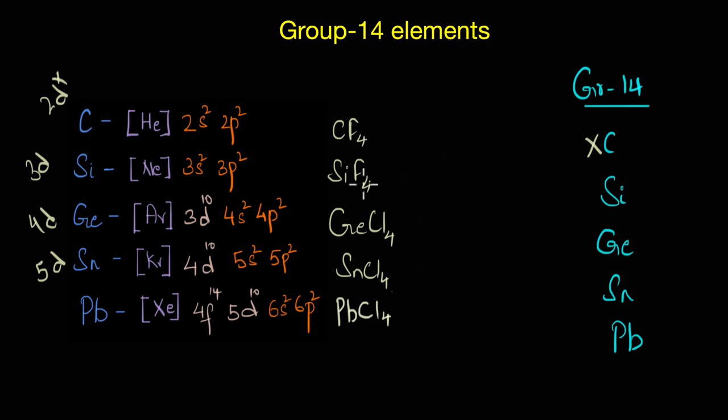For example, it is very common to observe tetravalent compounds of group 14 elements like CF4, SiF4, GeCl4, SnCl4, and even PbCl4. But when we talk about expanding the covalence beyond 4, not all of the group 14 elements can do it. Only those elements which have empty d orbitals are able to expand their covalence beyond 4 and form complexes.